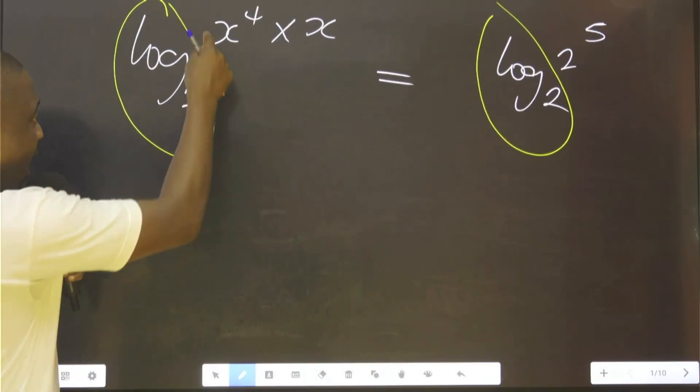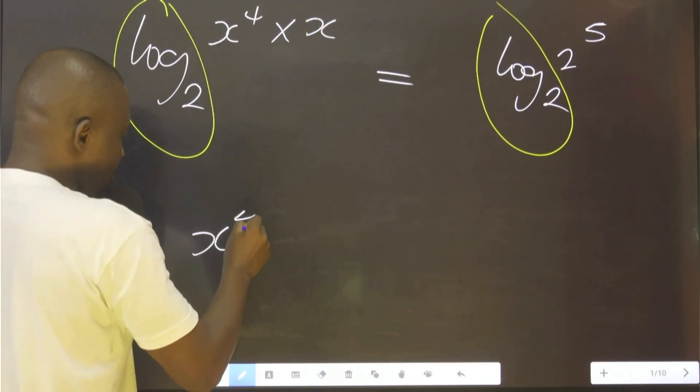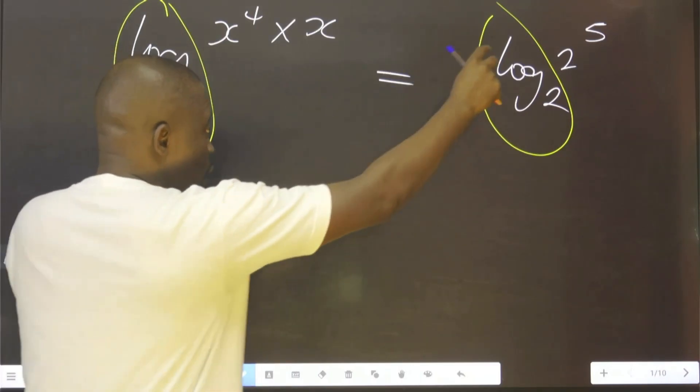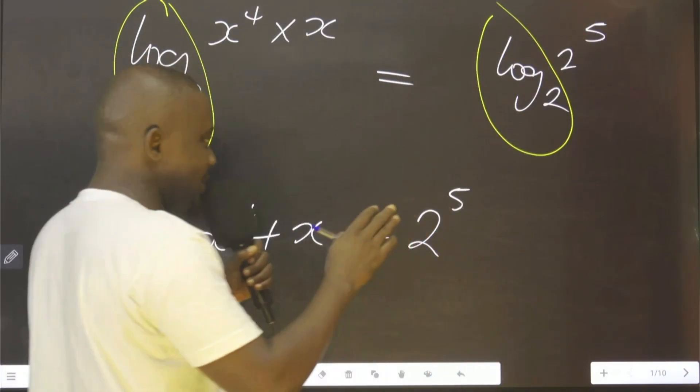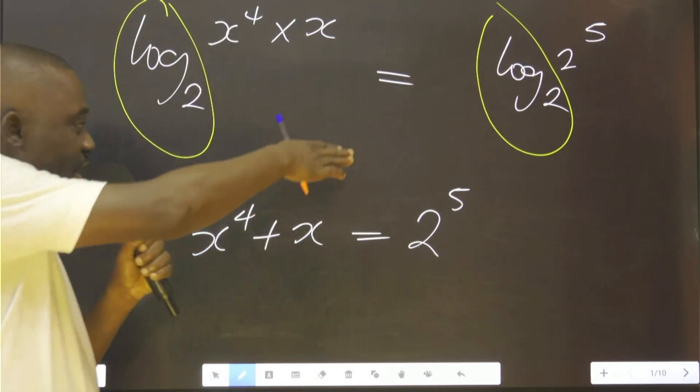Therefore I can take this one to be equal to this one. The only thing associated in removing is the log to the base of 2.